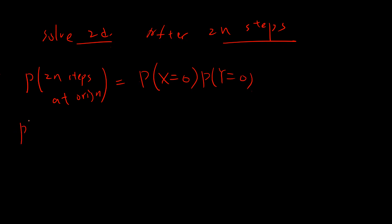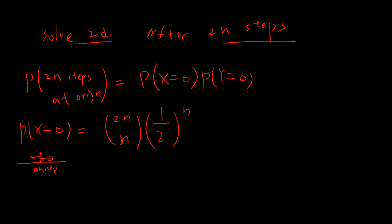The probability of being at the origin after 2n steps requires your x-position to be 0 and y-position to be 0. For the x-direction: in 2n steps I choose n to go east and n to go west, and for each step the probability is 1/2. So the x-contribution is C(2n, n) times (1/2)^(2n), and the full answer is this number squared.